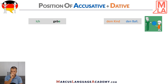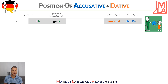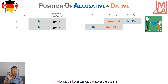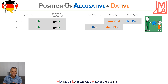But what happens if we change the noun into a pronoun? For example, when we replace 'den Ball' with a pronoun, the position stays at position two, but it changes this way: 'Ich gebe ihn dem Kind.' The direct object changes to the direct pronoun 'ihn', and it goes in front of the indirect object 'dem Kind', because pronouns want to stick closer to the verb.